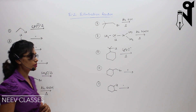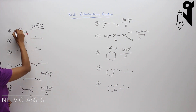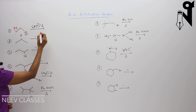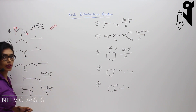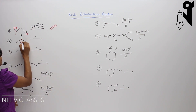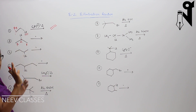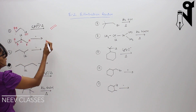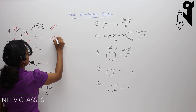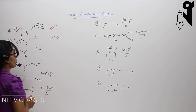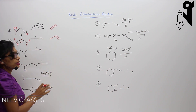In the first question, here is the chlorine and this is my beta carbon. Hydrogen will be removed from the anti position, and the molecule will look like this — that is my first answer. For the second question, this is my alpha carbon, this is beta, and this is another beta. It is a symmetric molecule, so hydrogen can be removed from either side, and the molecule formed will be this.